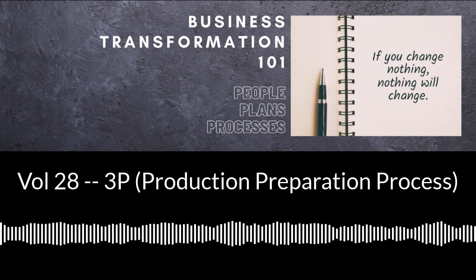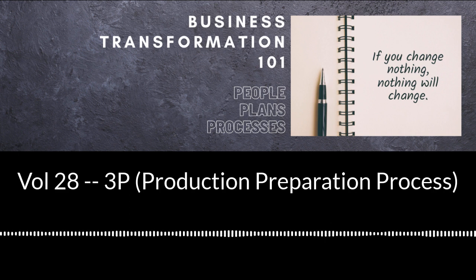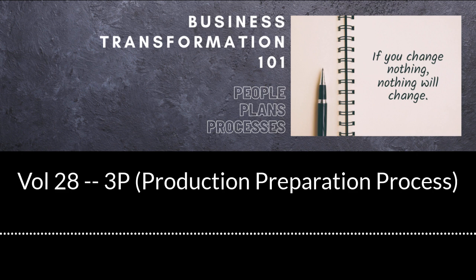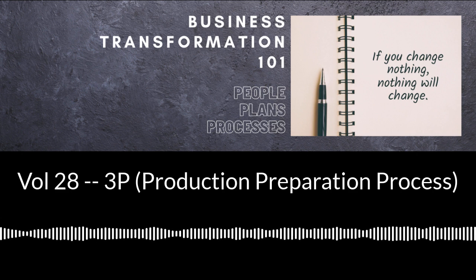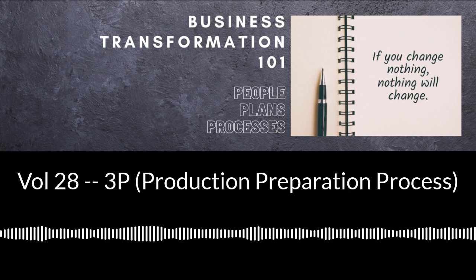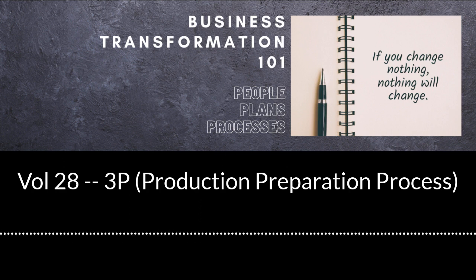Each team member identifies the key words that describe the function or functions of the item being improved. Key words that describe the item's function could include examples such as clamp, spin, hinge, grip, crush, adhere, drill, or enclose.